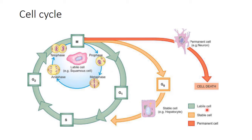Depending upon the ability to continually divide, cells are divided into three types: labile cells, stable cells, and permanent cells. Labile cells are cells which continually divide throughout their life cycle under normal physiologic conditions. Their cell cycle follows M phase, then G1, then S, then G2, then M again. Examples include the surface epithelial cells of the epidermis and cells of the epithelium of the alimentary tract.